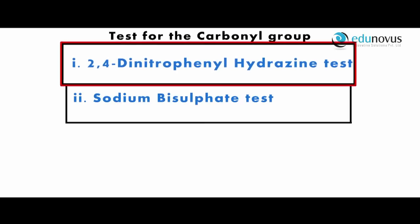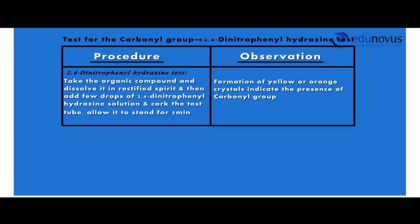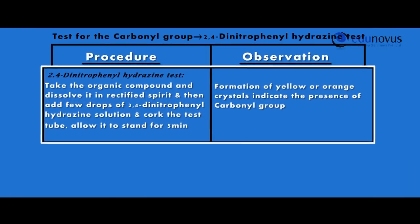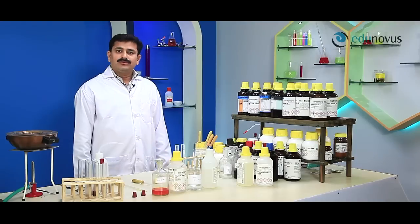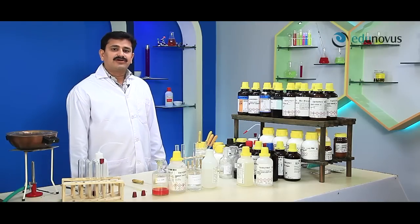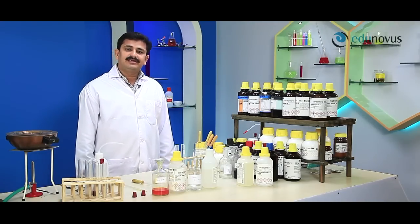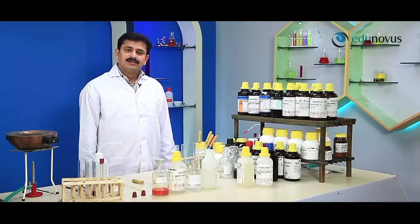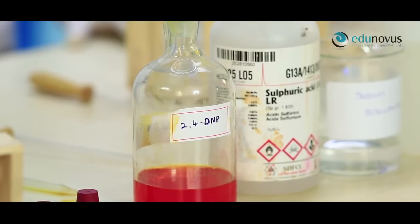2,4-Dinitrophenylhydrazine test. Detection of carbonyl group — that is, aldehyde and ketone groups. Let us identify the carbonyl group using the 2,4-dinitrophenylhydrazine test.